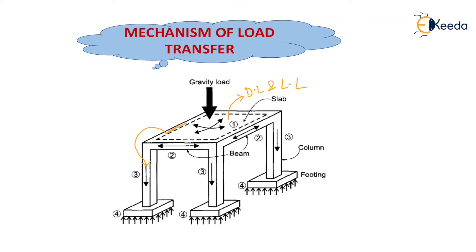The column transfers this point load to the footing. The footings then transfer this point load as a UDL to the soil. In this way, the load transfer mechanism is taking place.